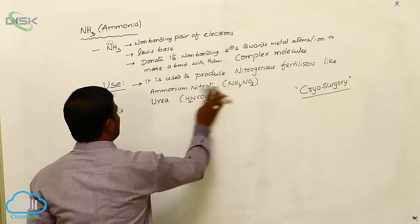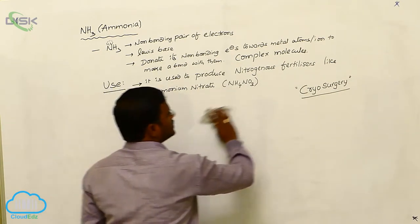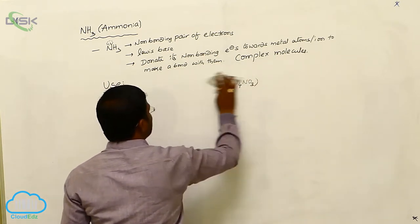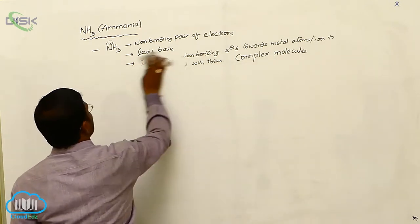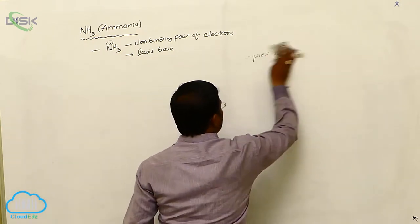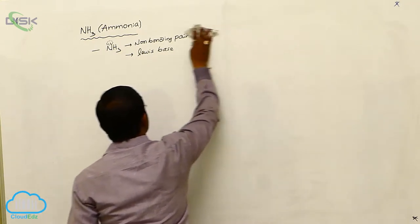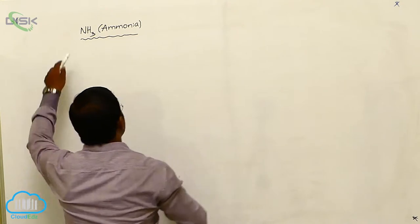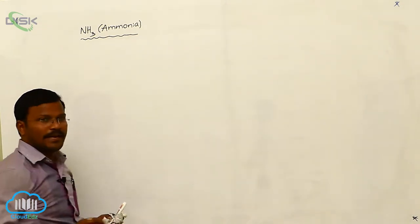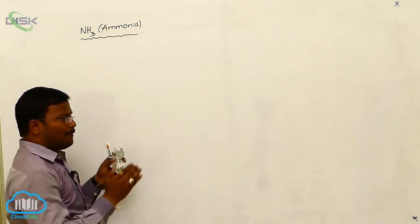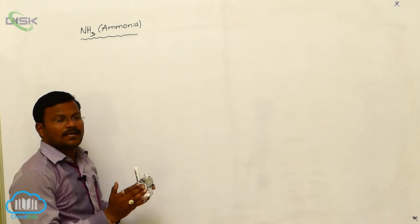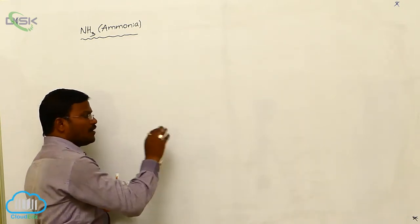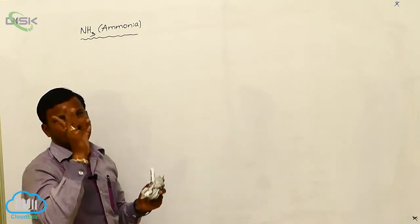The fifteenth group elements are nitrogen, phosphorus, arsenic, antimony, and bismuth. The most important hydride of nitrogen is ammonia. Till now we have explained the preparation, physical and chemical properties of ammonia, followed by its uses.